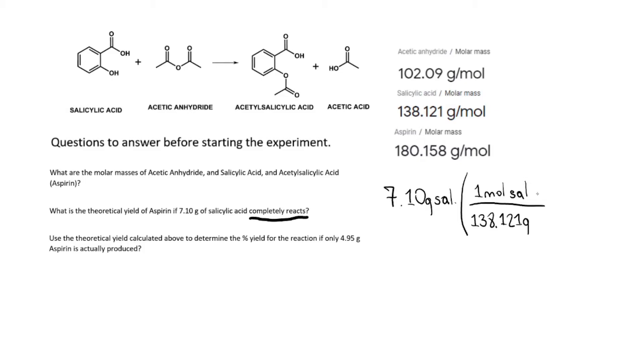Now we're in moles of salicylic acid. Another important thing about this reaction is knowing this is a one-to-one reaction. For every one mole of salicylic acid, there is one mole of aspirin. For every one mole of acetic anhydride used, there is one mole of aspirin. So for every one mole of salicylic acid, we get one mole of aspirin.